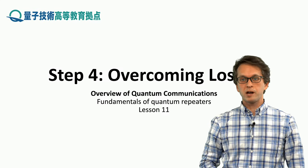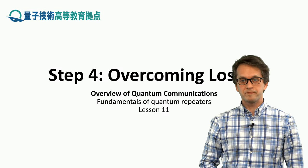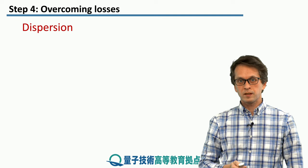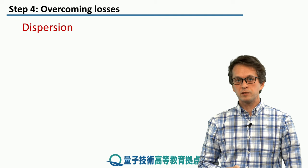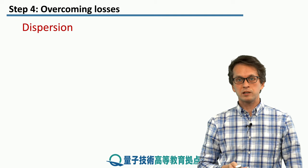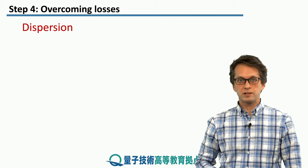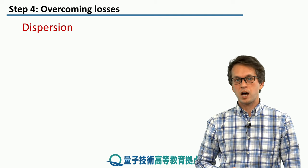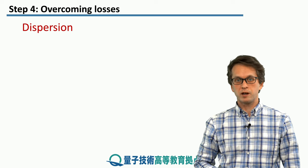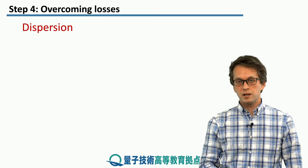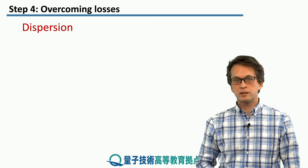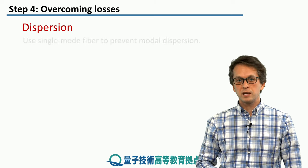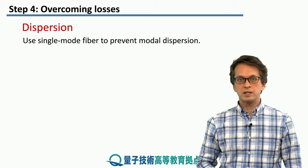Step 4: Overcoming losses. So we have seen what the sources of losses are. Now let's discuss how we can overcome them. Let's look at dispersion first — that's probably one of the easiest.